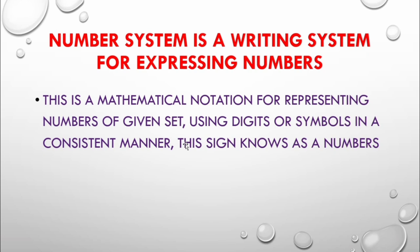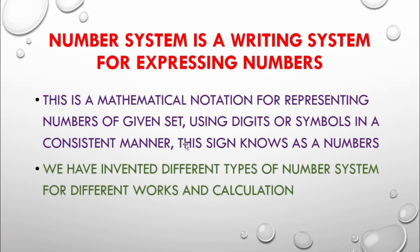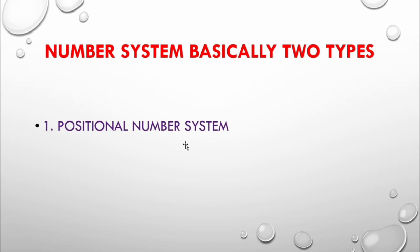This is known as numbers. When it is a mathematical notation for representing numbers of given set using digits or symbols in a consistent manner we are going to use. We have invented different types of number system for different works and calculation. Number system is basically two types: positional number system and non-positional number system.